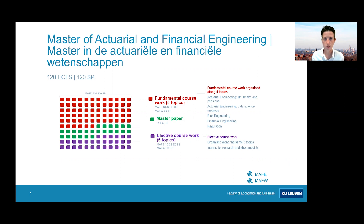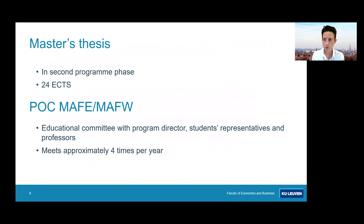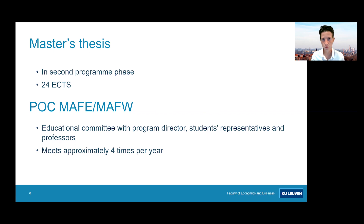We also have possibilities for study mobility, though given the pandemic situation it's a bit uncertain what we'll be able to offer. The master's thesis is typically written in the second year of the program and counts for 24 credits. You can work on a topic with one of the professors in the program, or in combination with a company or internship. Many offers from companies will be posted on our Toledo online learning platform throughout the year.